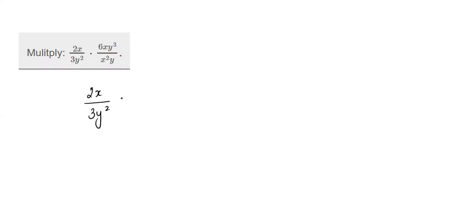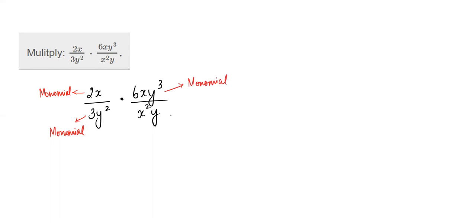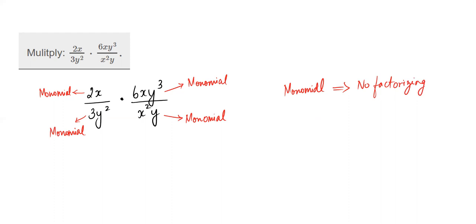Each of these expressions is actually a monomial — one term each. Monomial means no factorizing is needed, because what would you factorize with only one term? That means you can directly multiply them across.